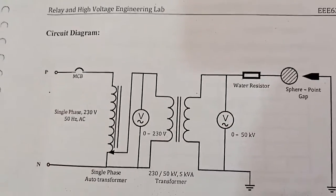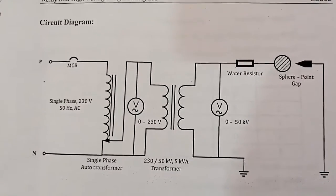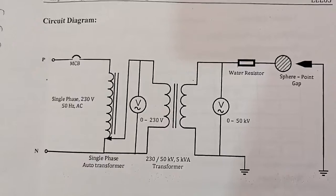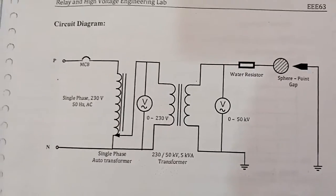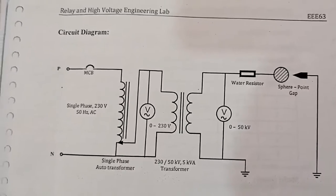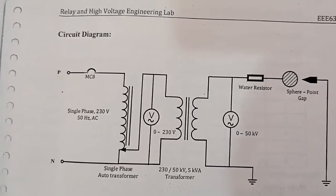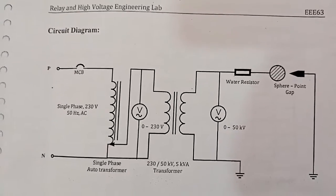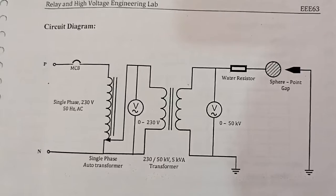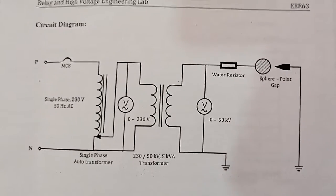Let us see the sub-Q diagram first clearly. You can see the sub-Q diagram connected with a single-phase transformer — a 230V by 50kV, 5kVA step-up transformer — connected to a plane-point gap where the Corona phenomenon is observed while conducting the experiment.